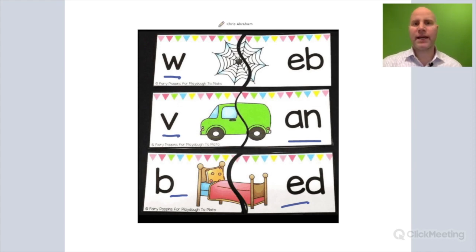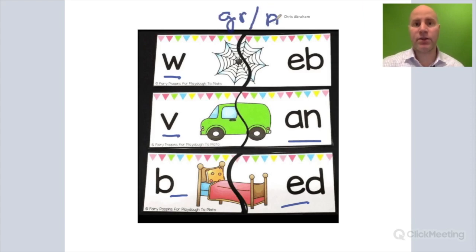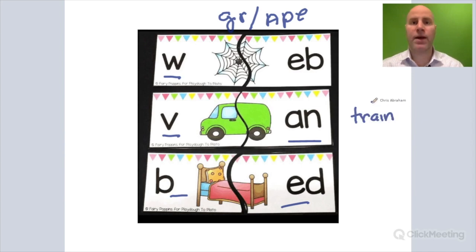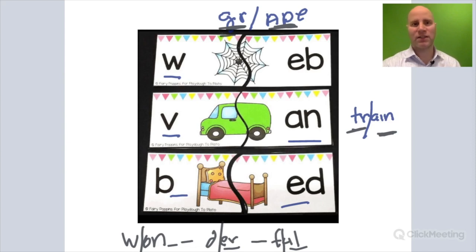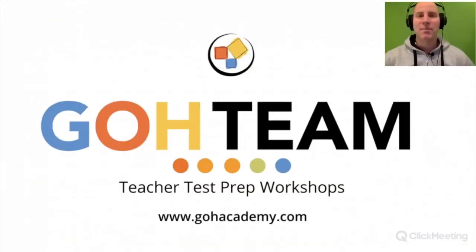We could take harder words like grape and break it into its onset and rhyme, or train and break it into its onset and rhyme. In grape, the onset is the beginning part of the word and the rhyme is the end. In train, it's the beginning and the rhyme is the end. There's lots of very important stuff happening in this kindergarten or first grade class.